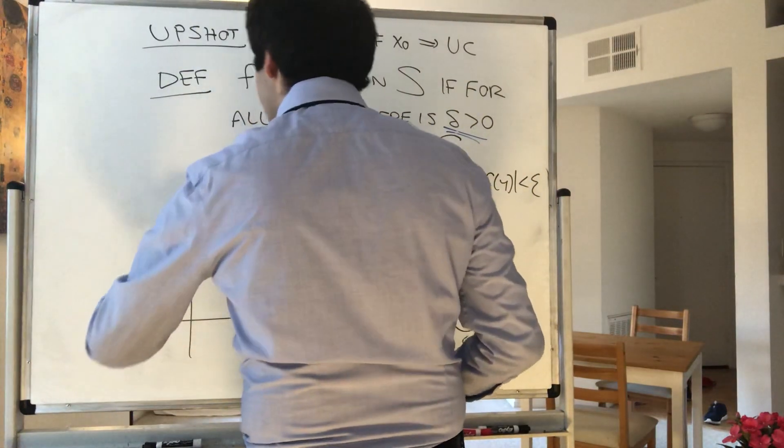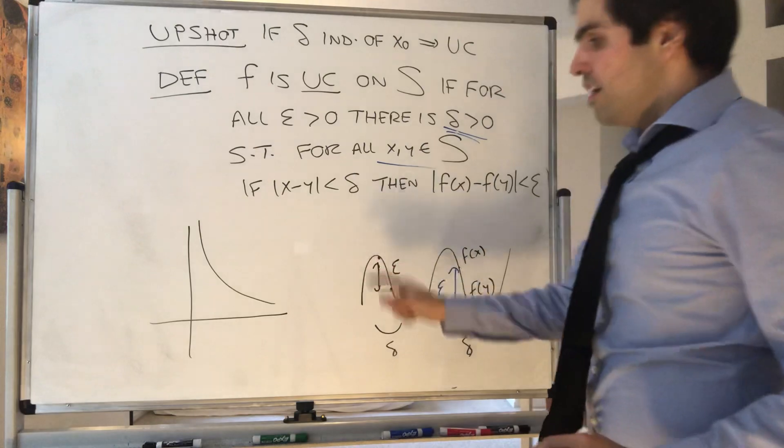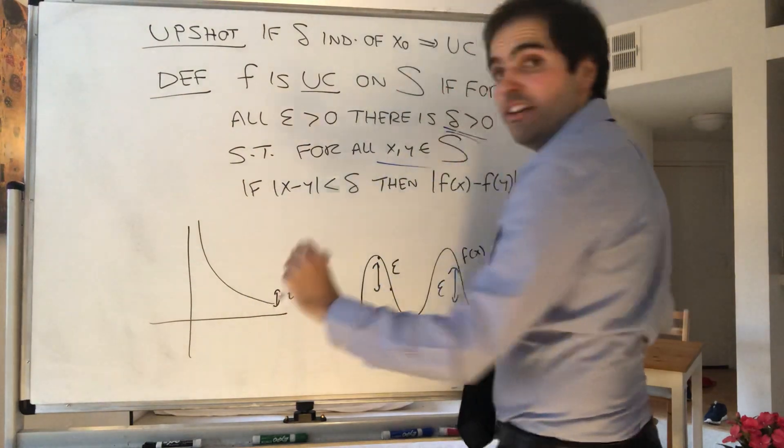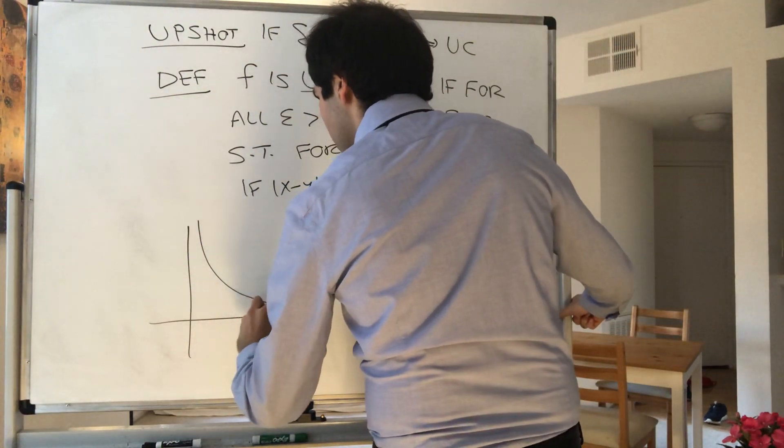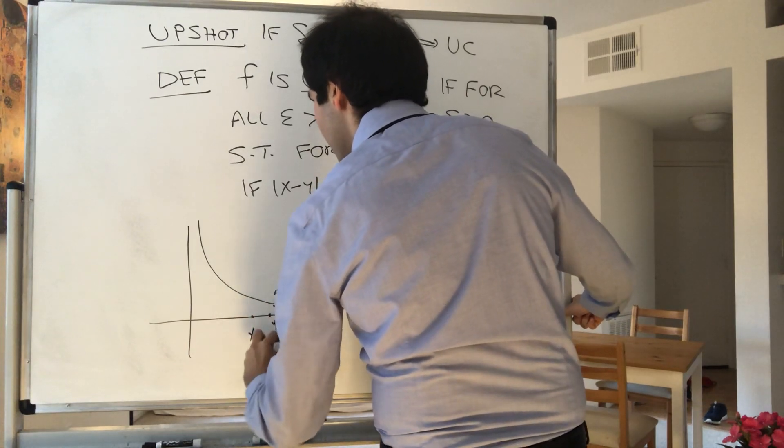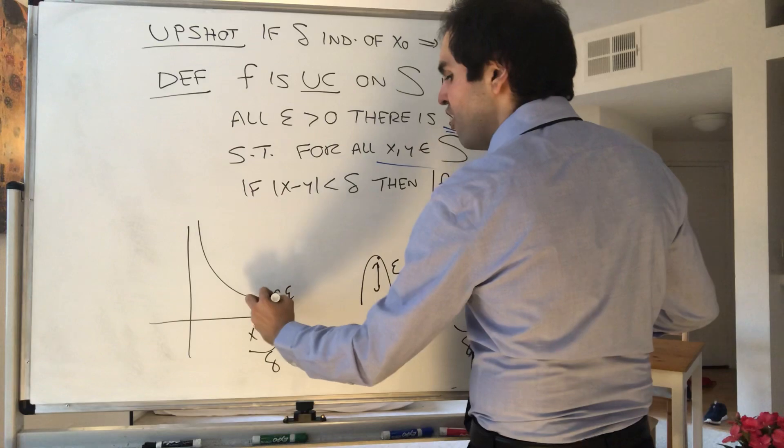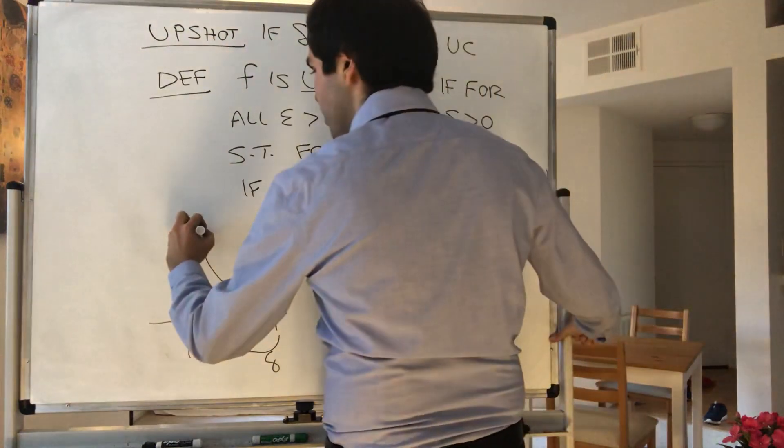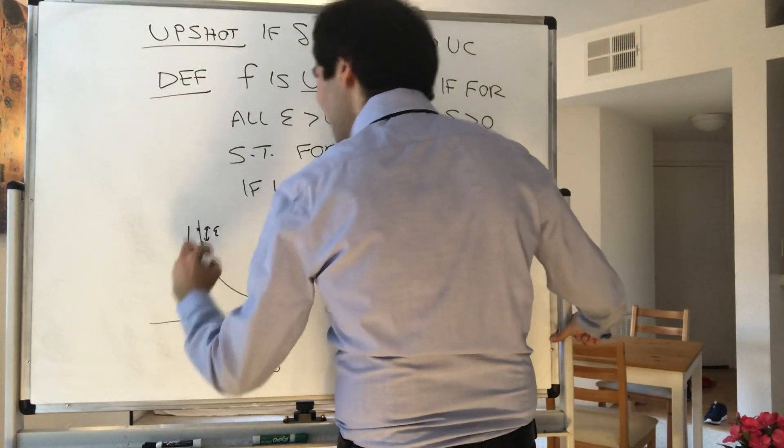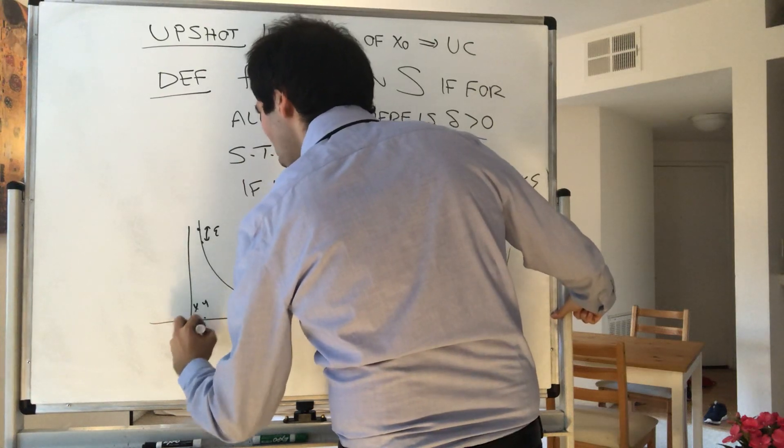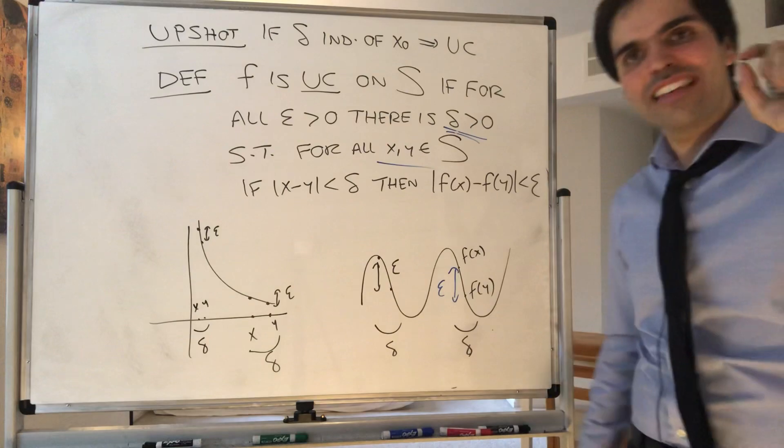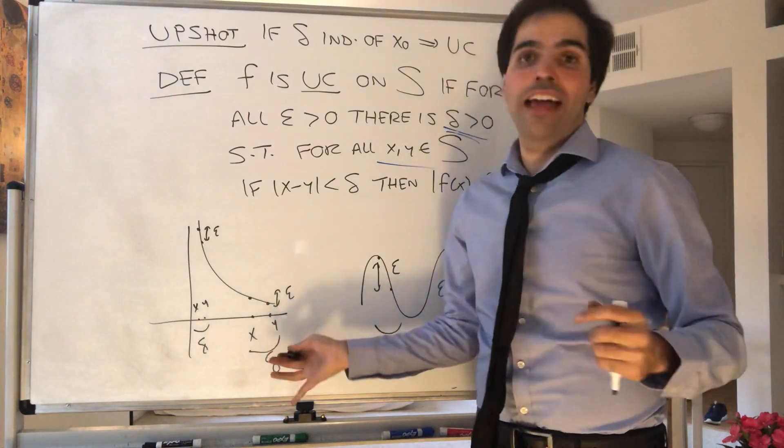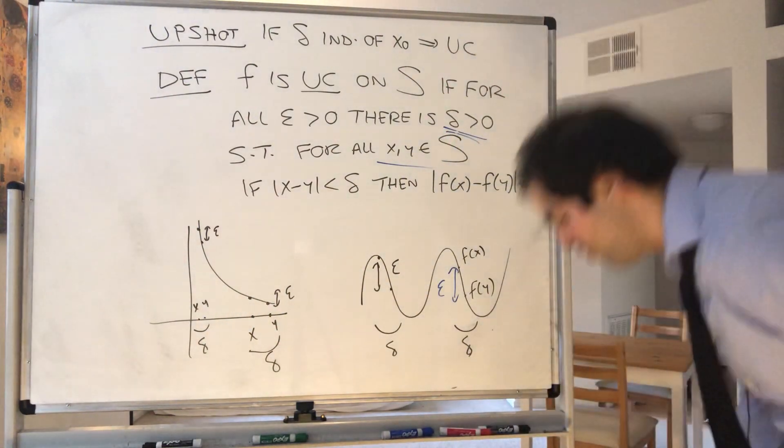Not uniformly continuous would mean something like 1 over x. Because you see, if you're far away from 0, then it's very easy to be epsilon apart. Because the point is, you don't need delta to be very small to actually have that f of x minus f of y is close enough together. But suppose you're close enough to 0, then x and y have to be super close together to actually get f of x minus f of y to be epsilon small. So here you see, delta actually here depends on where you're at, and that's why it's not uniformly continuous.